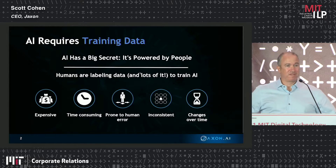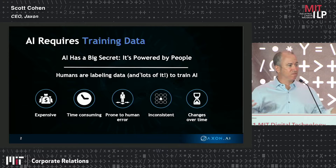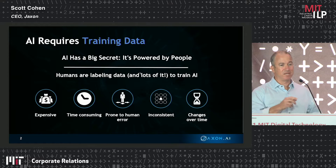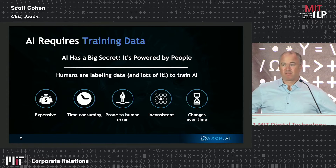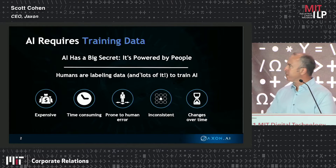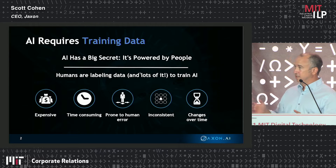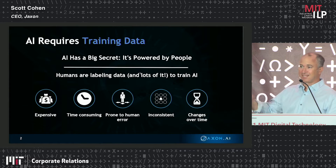As you've seen from many of these presentations, models need to be trained. They're trained on representative examples that have been labeled. The labeling task today is predominantly done by humans. Depending on whether it's an unsupervised or supervised learning model — most in production systems today are supervised learning — with teams of humans behind the scenes, labeling data one at a time, tens of thousands if not hundreds of thousands of times over.